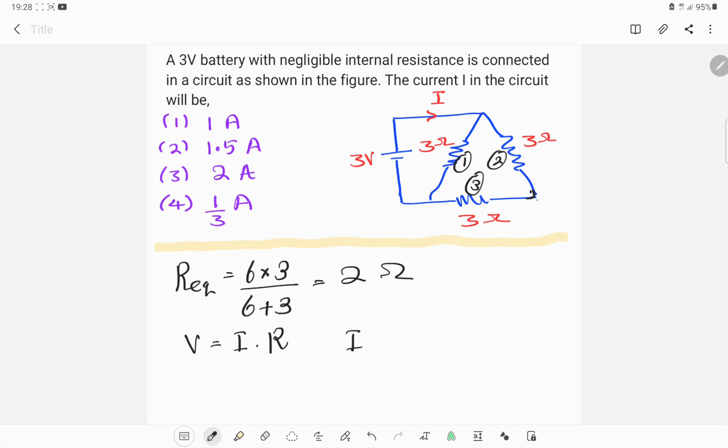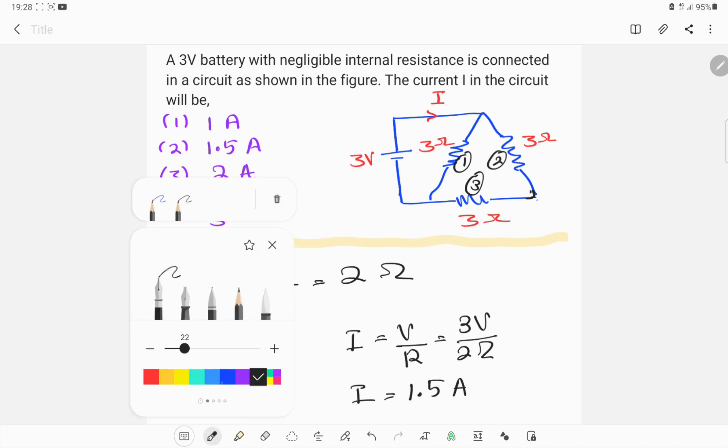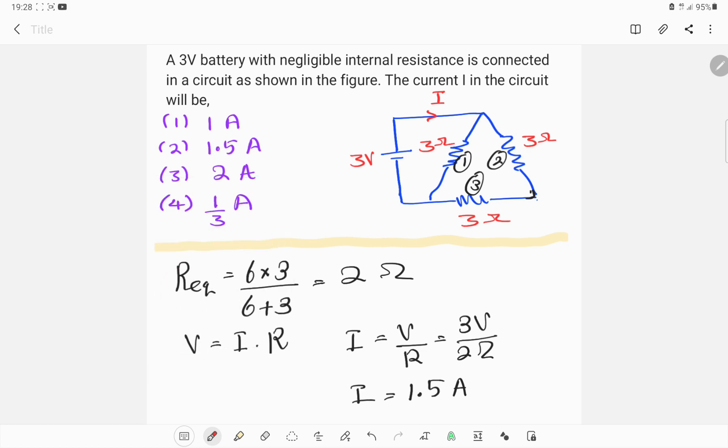I equals V divided by R equals 3 volts divided by 2 ohms, so I equals 1.5 amps. According to that, you can see the answer is 2, right?